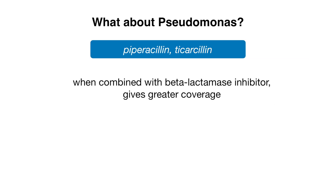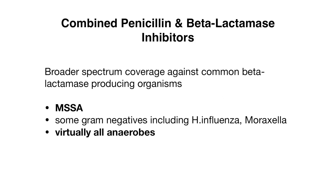Let's now move on to two penicillins that cover pseudomonas, unlike all the other antibiotics we just mentioned. These include piperacillin and ticarcillin, which when combined with a beta-lactamase inhibitor give you much greater antibiotic coverage. When we combine penicillin with a beta-lactamase inhibitor, it provides much broader spectrum coverage against common beta-lactamase-producing organisms like staphylococcal strains.